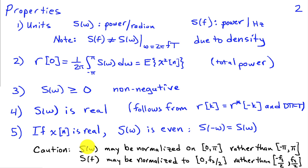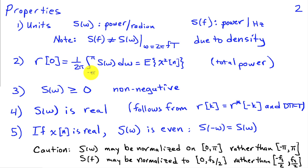One caution with real spectra: your power spectrum as calculated by software like MATLAB may be normalized on zero to pi rather than minus pi to pi. That means the total power is obtained by integrating from zero to pi, or equivalently from zero to f_s over 2 if we're in units of hertz.